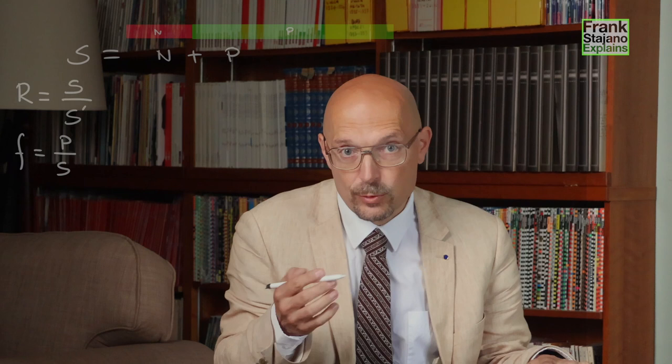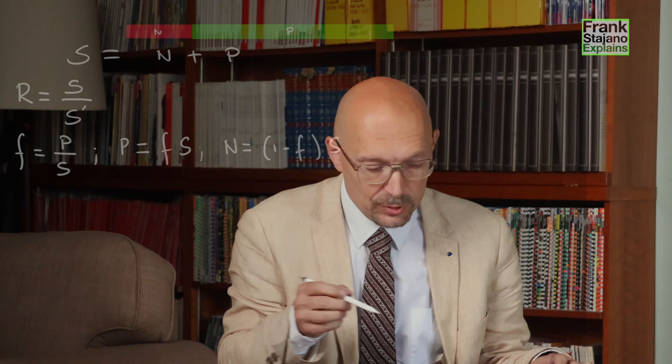In our example, this fraction is three quarters. And it follows that p is equal to f times s. And since p and n add up to s, then n must be the rest, which is 1 minus f times s.